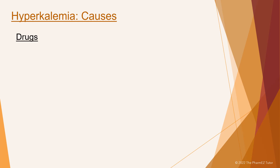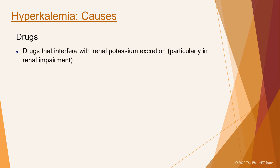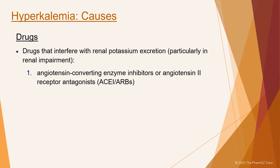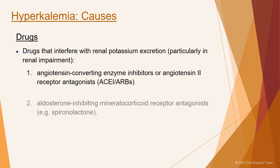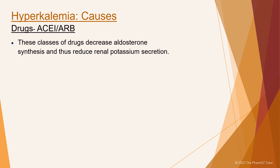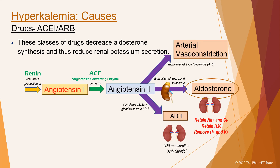There are three drug classes that can cause hyperkalemia — drugs that interfere with potassium excretion, particularly in renal impairment. The first class is angiotensin-converting enzyme inhibitors, or angiotensin-2 receptor antagonists, ACE inhibitors or ARBs. The second class are aldosterone-inhibiting mineralocorticoid receptor antagonists, such as spironolactone. The third class are potassium-sparing diuretics, such as triamterene. Patients taking an ACE inhibitor or ARB are prone to hyperkalemia because these drugs decrease aldosterone synthesis and thus reduce renal potassium secretion. They block the effect of angiotensin-2, resulting in decreased aldosterone levels, causing sodium elimination and potassium retention.